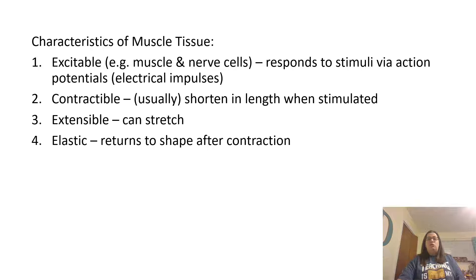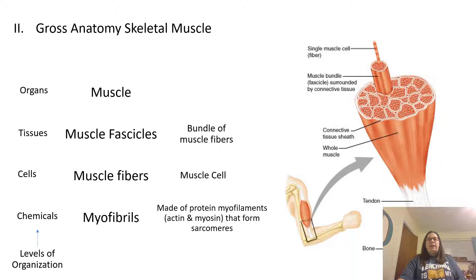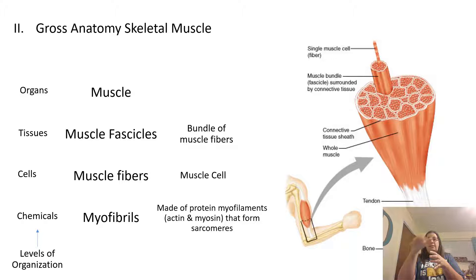Let's look at the gross anatomy of a skeletal muscle — gross here refers to large-scale anatomy. We'll look at the levels of organization, starting with the chemical level, then the cells, tissues, and the organ itself. The chemicals that make up skeletal muscle are myofibrils, made of protein myofilaments known as actin and myosin, which form the sarcomere structure. The cells of a skeletal muscle are known as muscle fibers, which get bunched together with connective tissue to form muscle fascicles, and all the fascicles packaged together create the muscle itself.